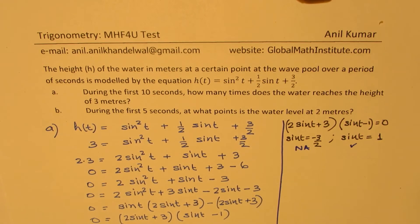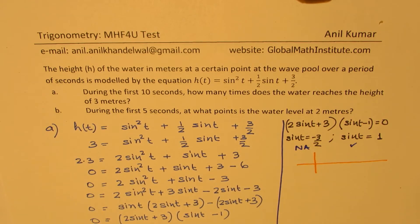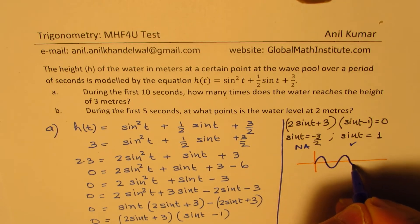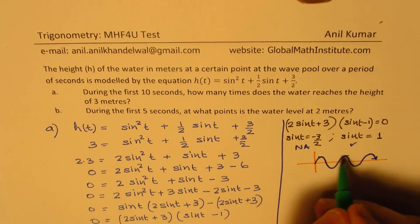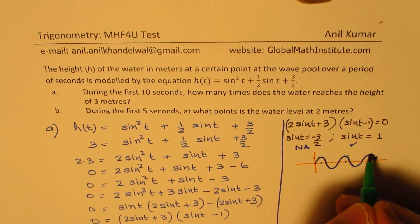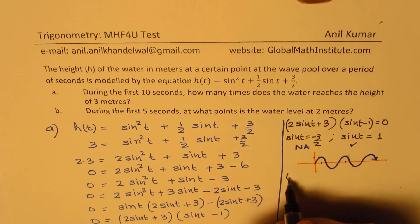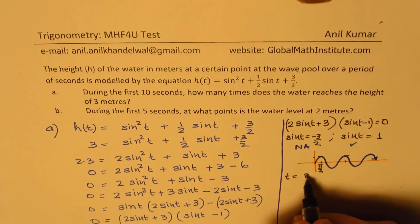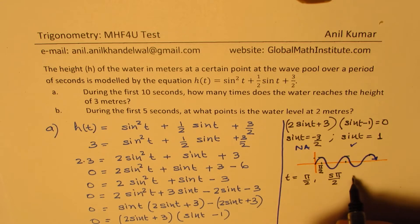Let's find the possible solutions by sketching the sine curve. When sin(t) = 1, we are looking at the peaks of the curve. The values are t = π/2, then with period 2π, the next value is 5π/2, and after that 9π/2.